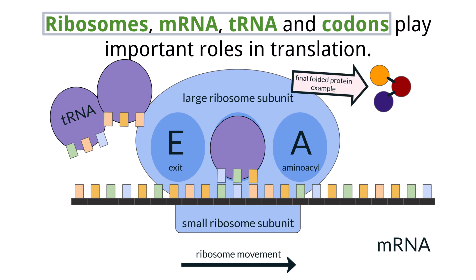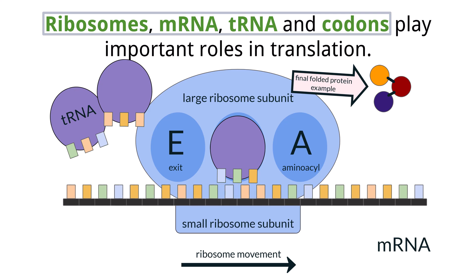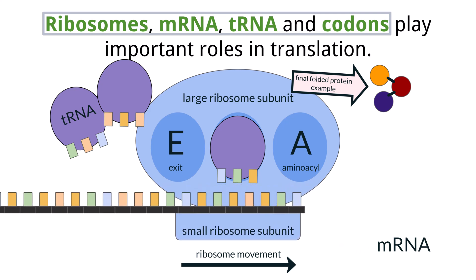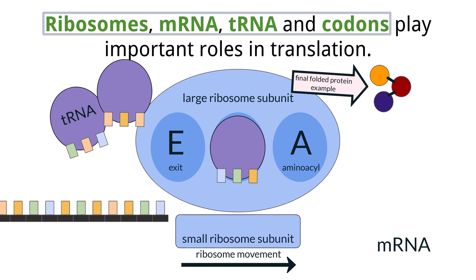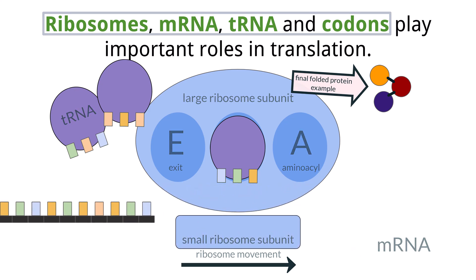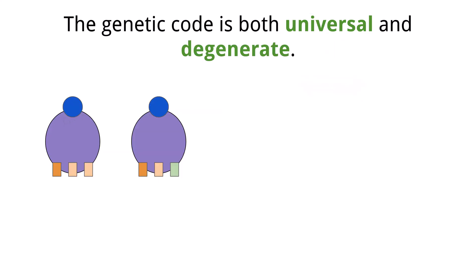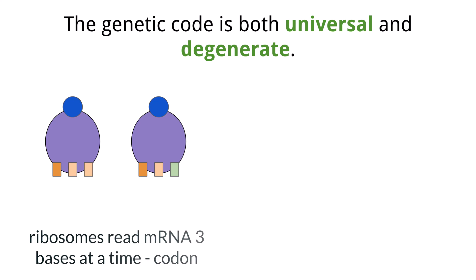This completely ends the process of translation, and the ribosome subunits will detach and be available for another messenger RNA sequence to translate. The genetic code is read by a ribosome in groups of three nucleotides at a time, which we call a codon.